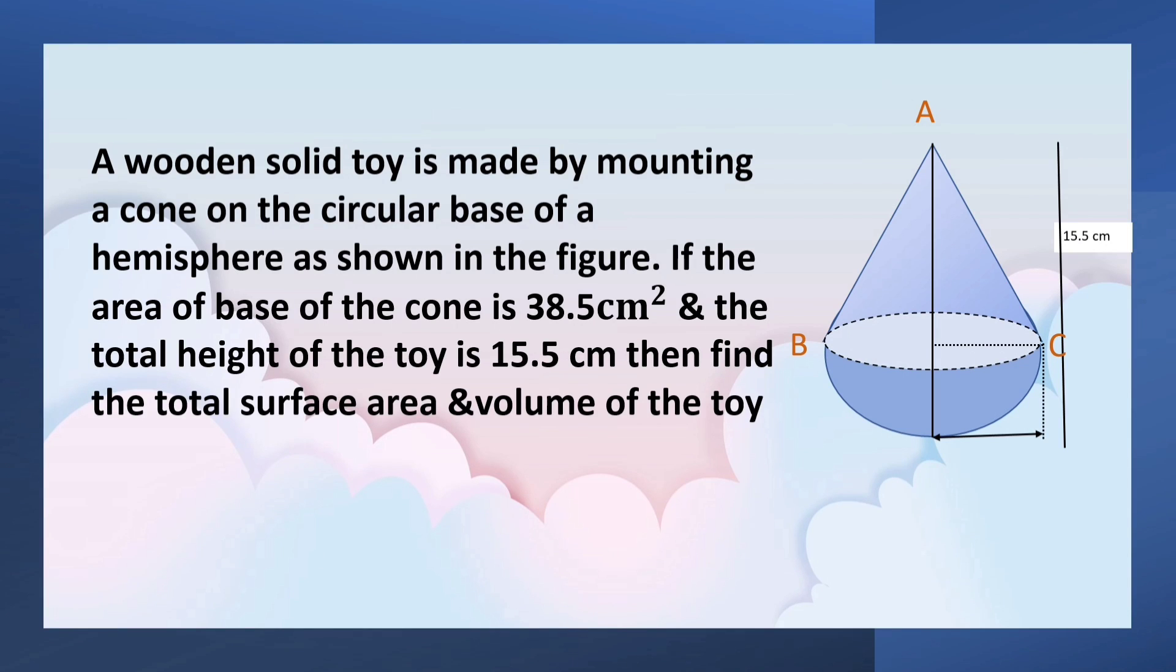A wooden solid toy is made by mounting a cone on the circular base of a hemisphere as shown in the figure. If the area of the base of the cone is 38.5 cm², the total height of the toy is 15.5 cm, then find the total surface area and volume of the toy.